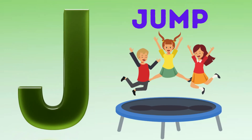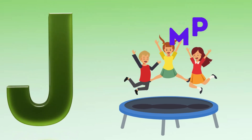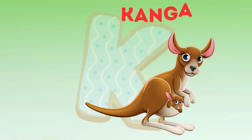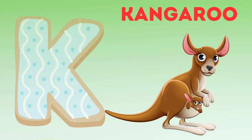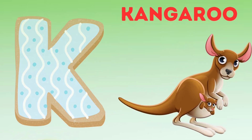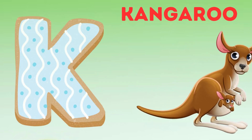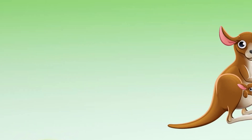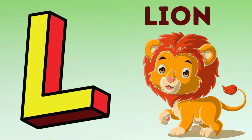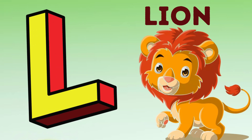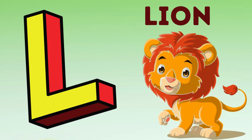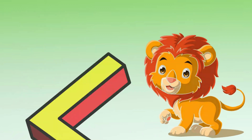J is for jump, j-j-jump. K is for kangaroo, k-k-kangaroo. L is for lion, l-l-lion.